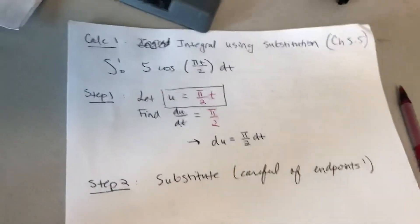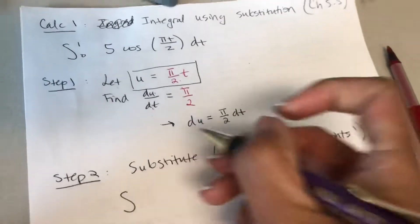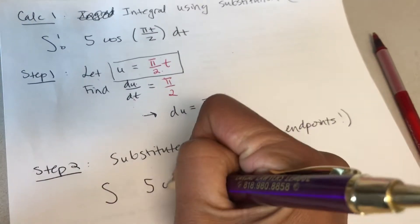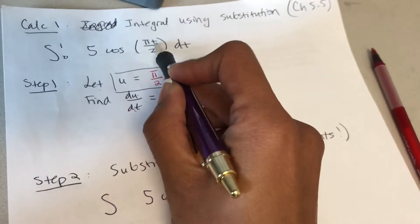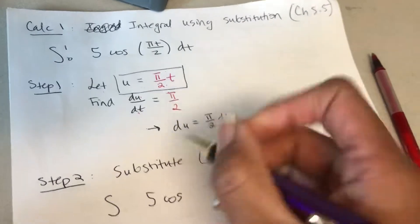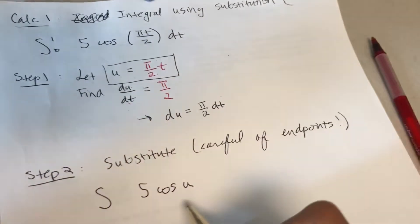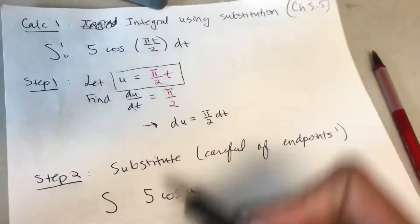When I substitute into the integral, I have 5 sitting right there, cosine. Instead of pi t over 2, I'm gonna write u instead. That was the purpose of substitution, to make something difficult look simple.